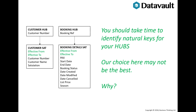It's very important to choose natural keys for your hubs. We have selected system keys for our customer and booking hubs, but these may not be the best choice. Booking, for example, may be better identified by the date-time of the booking, or the brand plus date-time created. Source systems can change during the life of a warehouse — each will have a separate identifying reference number, numbering schemes can change, and we don't want different schemes overlapping.